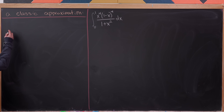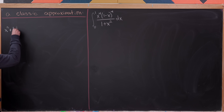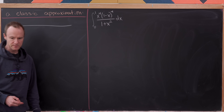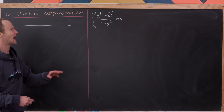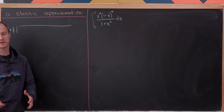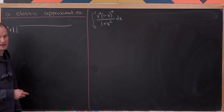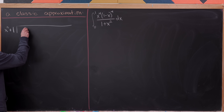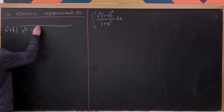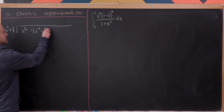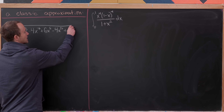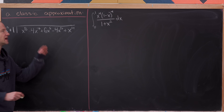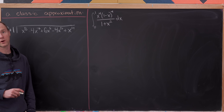Let's start with the denominator: x squared plus 1, dividing into the numerator. I'll write the numerator out by expanding x to the fourth times one minus x to the fourth using the binomial expansion formula. That gives us x to the 8 minus 4x to the 7 plus 6x to the 6 minus 4x to the 5 plus x to the 4, after multiplying the x to the fourth through.